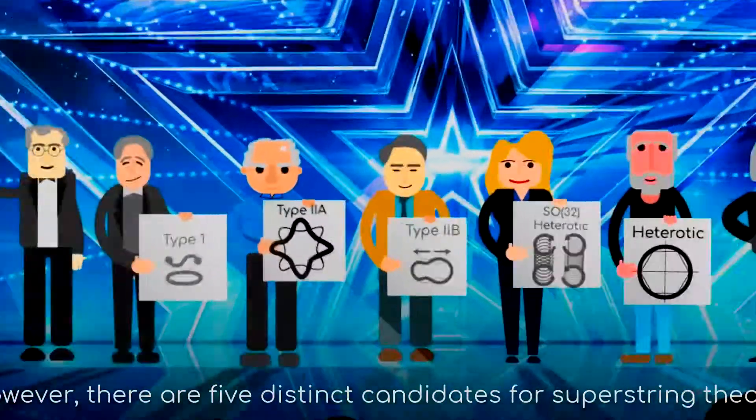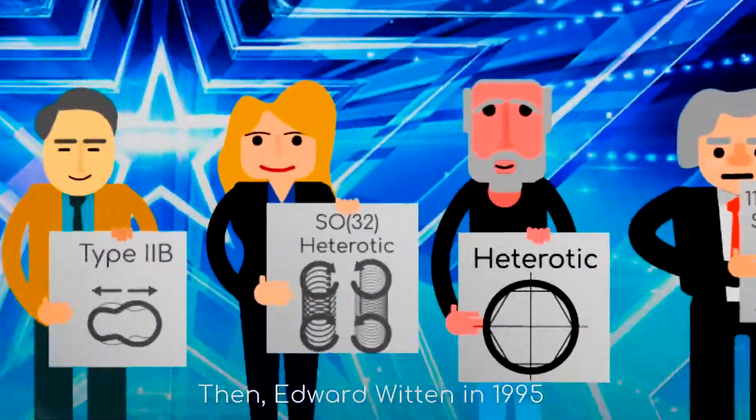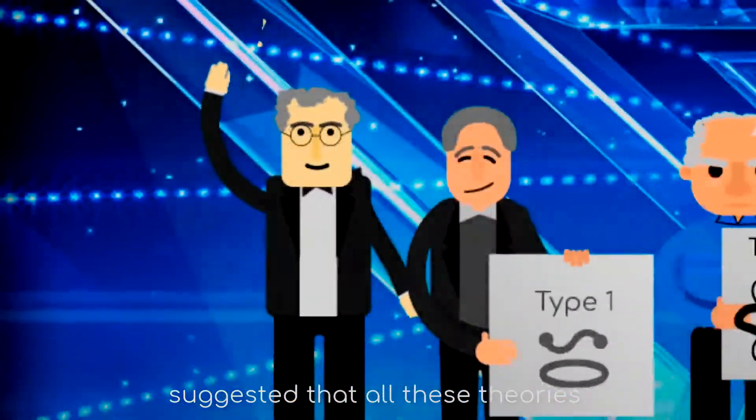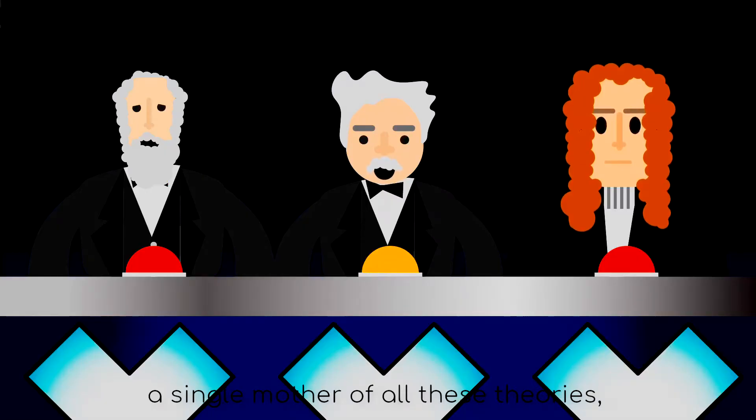However, there are five distinct candidates for supersymmetric theory and an 11-dimensional supergravity. Then, Edward Witten in 1995 suggested that all of these theories are just limiting cases of a single mother of all these theories, M-theory.